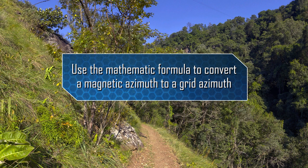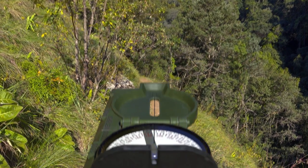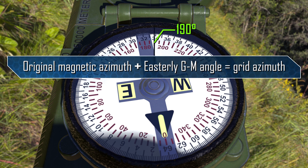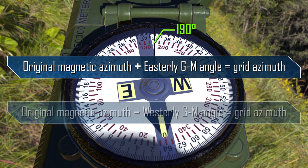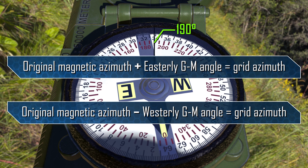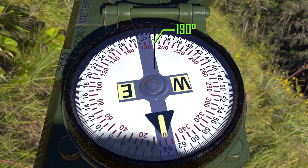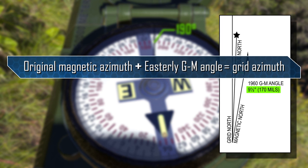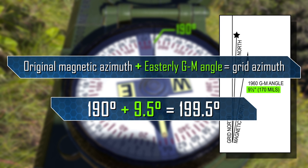Use the mathematic formula to convert a magnetic azimuth to a grid azimuth. In this example, our compass reads a magnetic azimuth of 190 degrees. Add an easterly GM angle to the given magnetic azimuth to convert to a grid azimuth. Subtract a westerly GM angle from the given magnetic azimuth to convert to a grid azimuth. The declination diagram indicates the GM angle is 9.5 degrees and easterly, so we add the 9.5 degree easterly GM angle to the given magnetic azimuth of 190 degrees, resulting in a 199.5 degree grid azimuth.